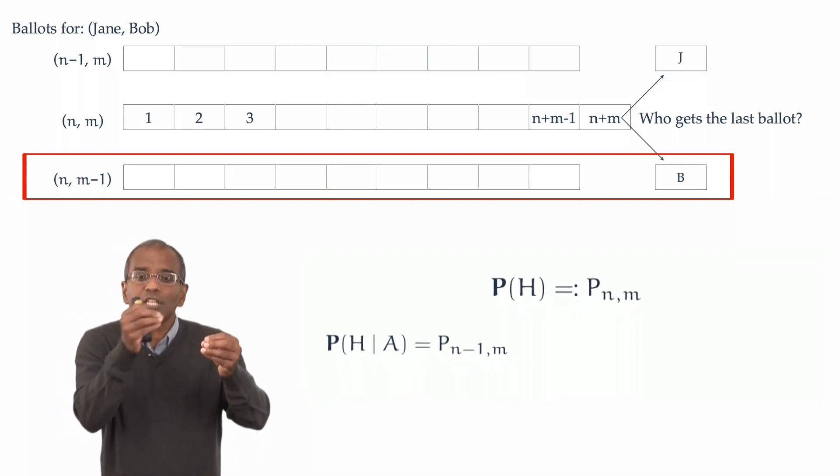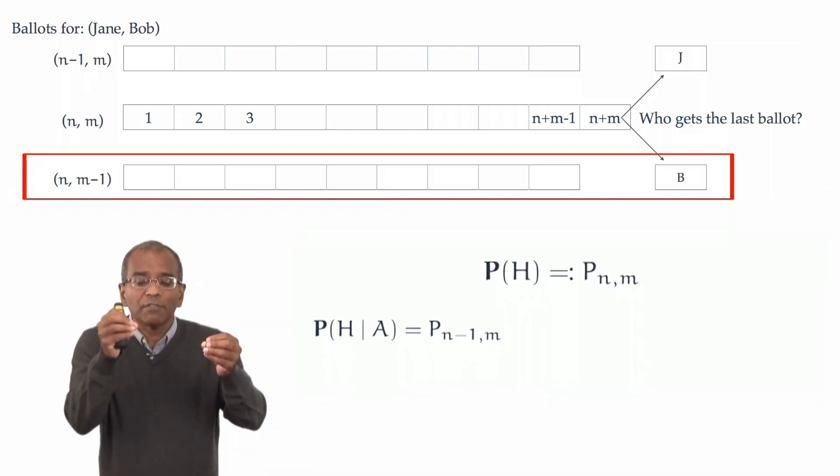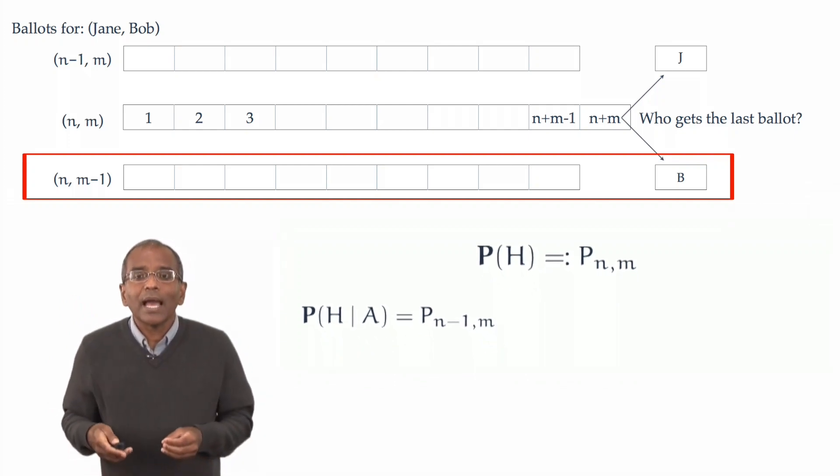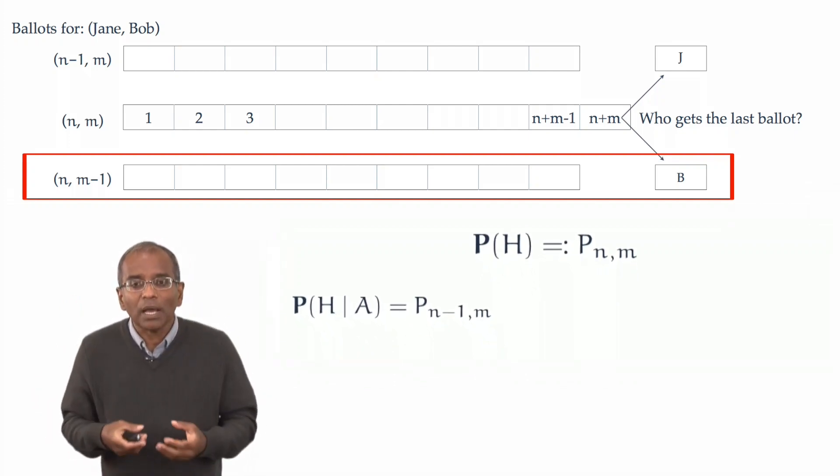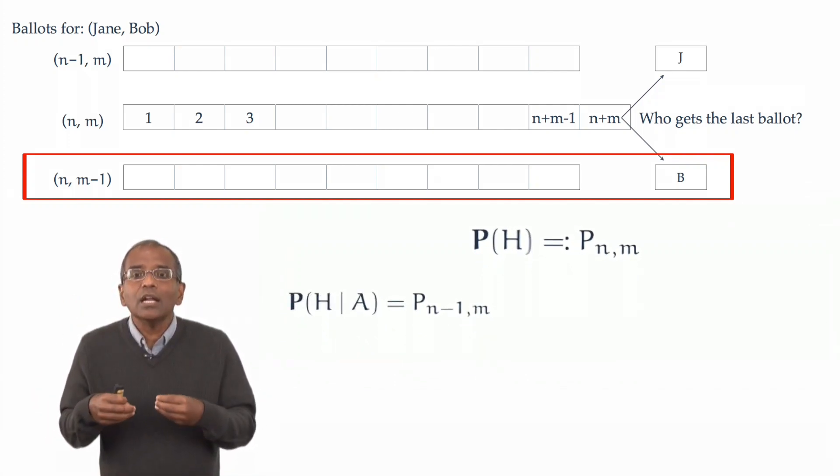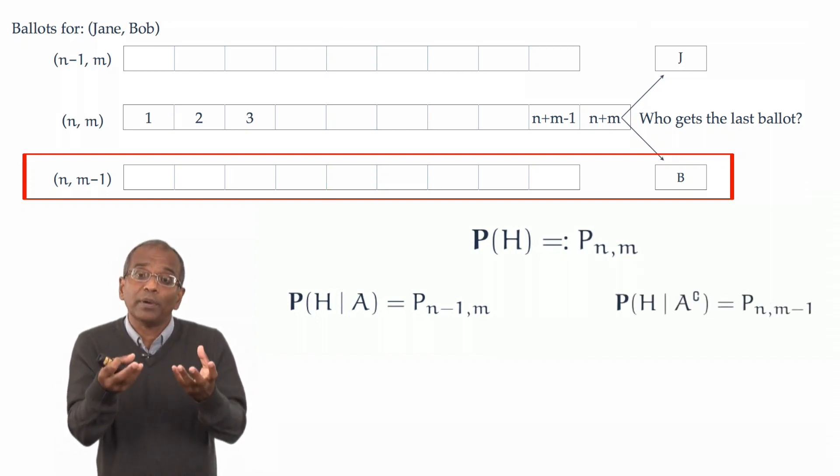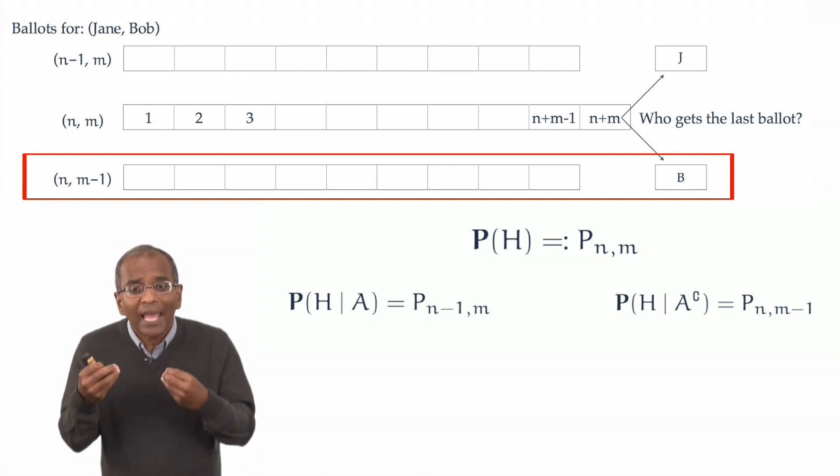And they have to be arranged in such a way that Jane leads every step of the way. And by our definition, by our notational choice, the conditional probability of H, given the complement of A that Bob gets the last ballot, is exactly p sub n comma m minus 1.